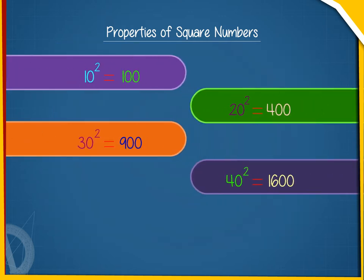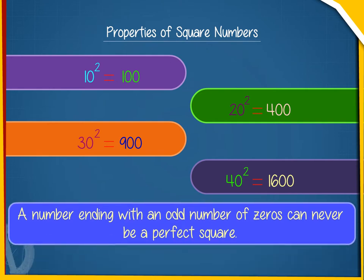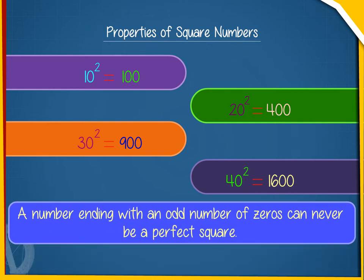Property 4: The number of zeros at the end of a perfect square is always even. For example, 10² equals 100, 20² equals 400, 30² equals 900, 40² equals 1600, and so on. A number ending with an odd number of zeros can never be a perfect square.